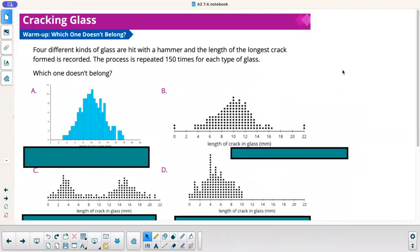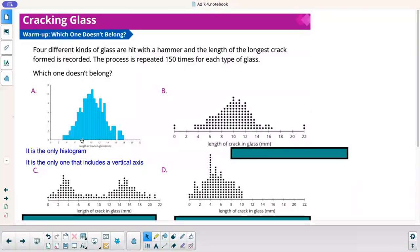Go ahead and pause the video and take a look at the four graphs and tell me which one doesn't belong. Four different kinds of glass are hit with a hammer, and the length of the longest crack formed is recorded. The process is repeated 150 times for each type of glass. For A, this is the only histogram. It's the only one that includes a vertical axis, so we know for sure how high each one of these bars are. Versus on the dot plot, we don't know if each dot represents a frequency of one inch or two inches.